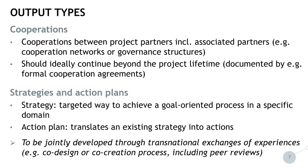For the next output type we have strategies and action plans. A strategy is a targeted way to achieve a goal-oriented process in a specific domain. An action plan translates an existing strategy into actions. Importantly, strategies and action plans need to be jointly developed through transnational exchanges of experiences. This can be done, for example, in a co-design and co-creation process, which can include peer review processes.